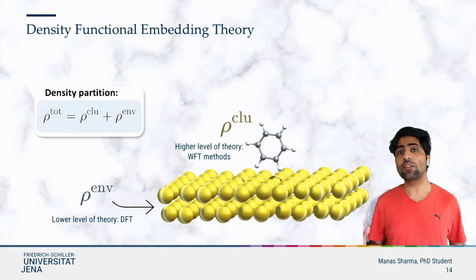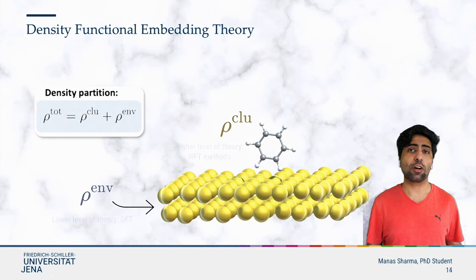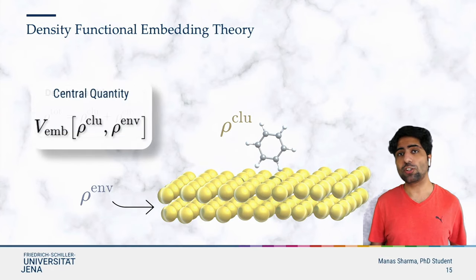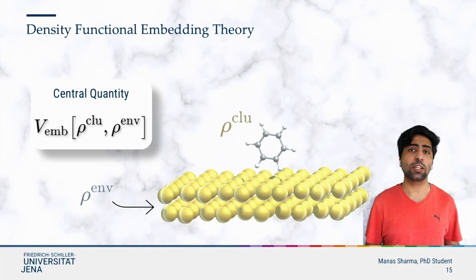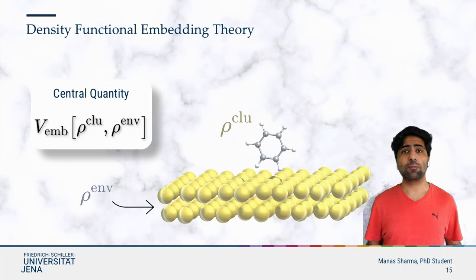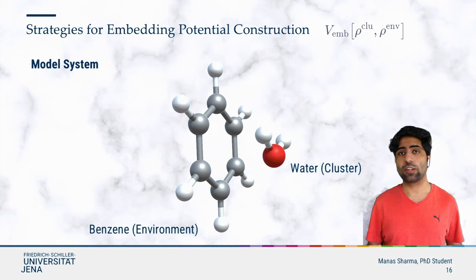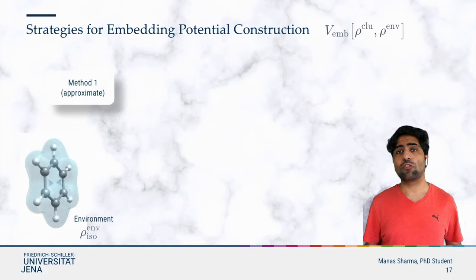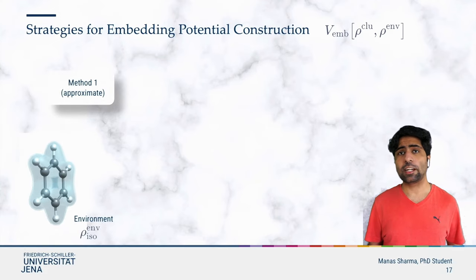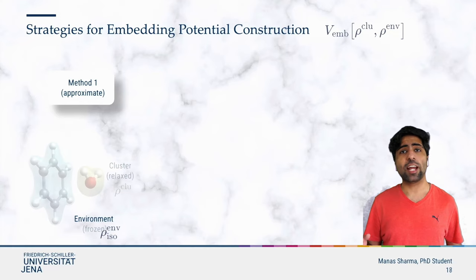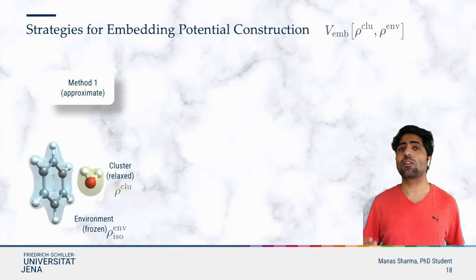Then the influence of the environment on the cluster can be accounted for in the form of an embedding potential, which is a functional of the cluster and environment densities. Various strategies to construct the embedding potential have been implemented. Here, the benzene molecule is the environment and the water molecule is the cluster — that is, the region of interest. The first method is to relax the isolated environment density, then plug this density into the embedding potential and relax the cluster density in the presence of this embedding potential.